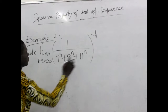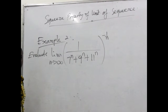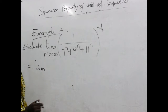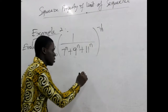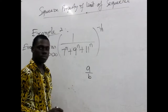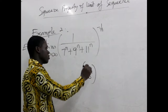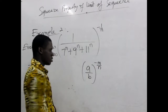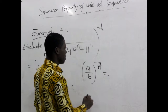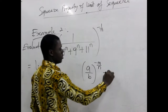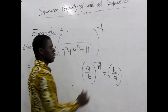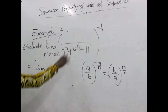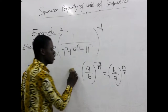Let's begin by rewriting this in a different form. From index laws, when you have a over b raised to the power negative m over n, this is the same as b over a raised to the power m over n — the negative sign flips the fraction. We want to use that to reduce this to look a little nicer.